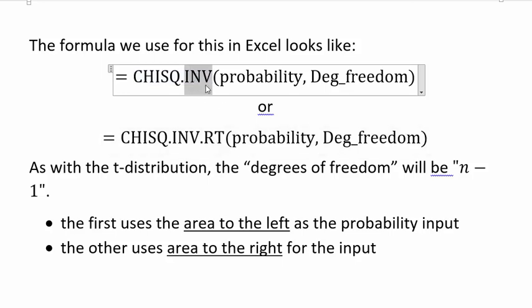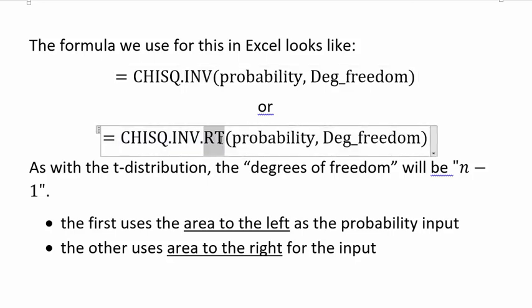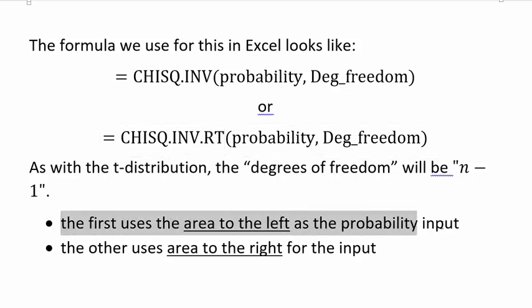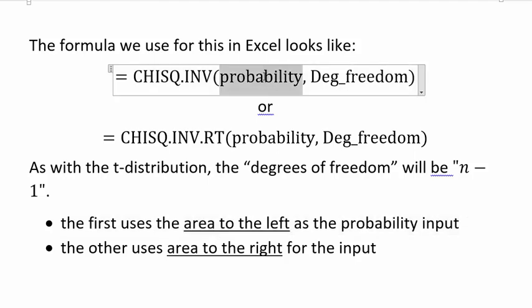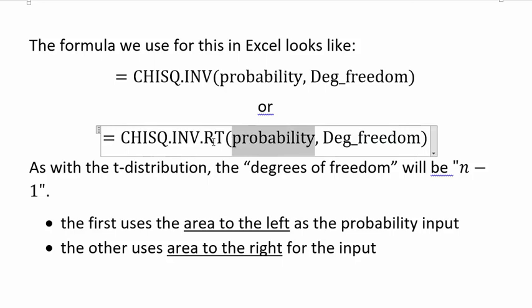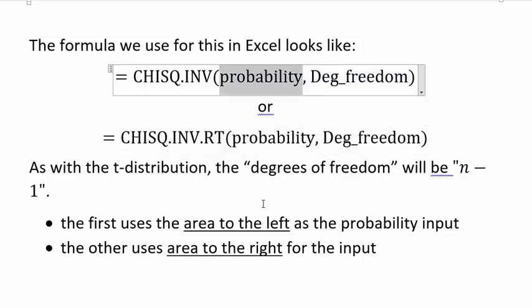There are two different versions of the function: CHISQ.INV and CHISQ.INV.RT. The first uses the area to the left as the probability input, just like we're used to with the normal distribution function. The other version, the RT or right version, uses the area to the right as the probability input. They function the same way — it's just whether you're specifying area to the right or area to the left. You need to choose whichever makes more sense for your scenario.